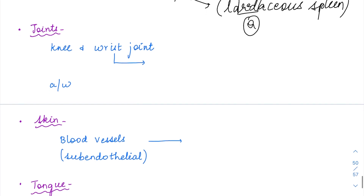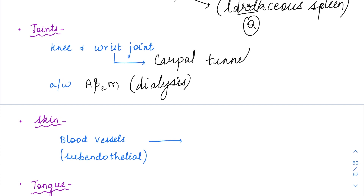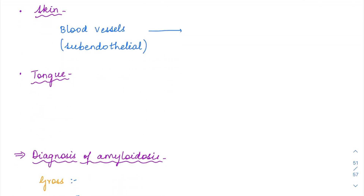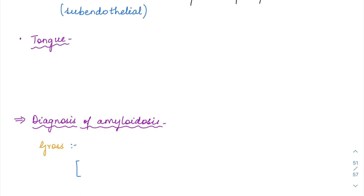In joints, amyloid deposition occurs especially in the knee and wrist, particularly associated with dialysis patients (A-beta-2 microglobulin). In the wrist joint, accumulation causes carpal tunnel syndrome due to median nerve compression. In the skin, amyloid deposits around blood vessels making them fragile; pinching the skin produces bleeding — called pinch purpura. In the tongue, amyloid deposition causes macroglossia.